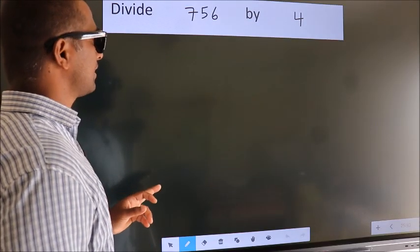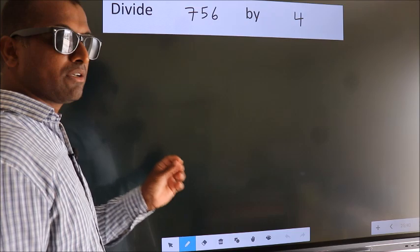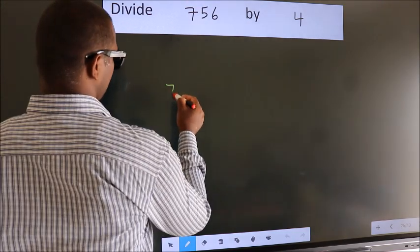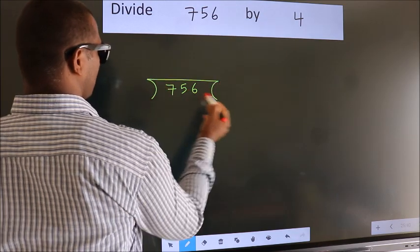Divide 756 by 4. To do this division, we should frame it in this way. 756 here, 4 here.